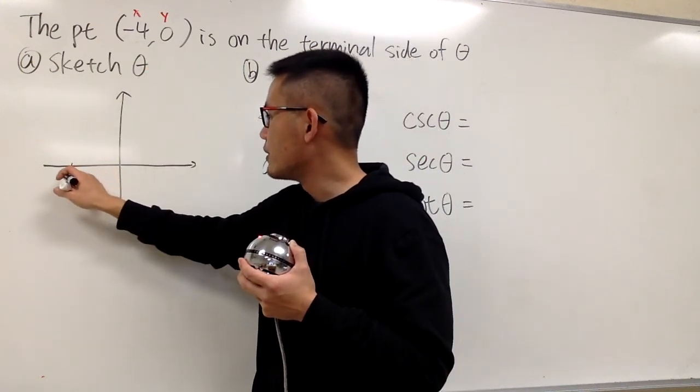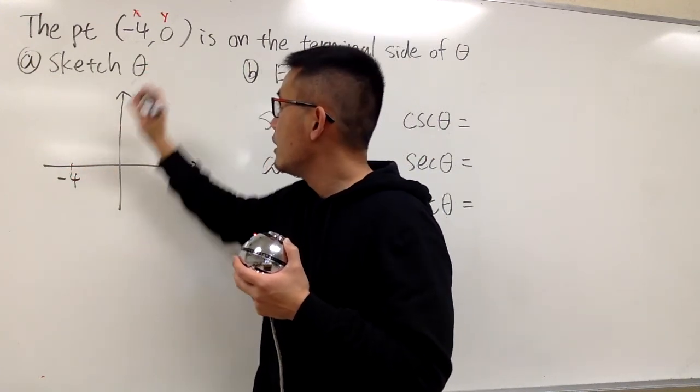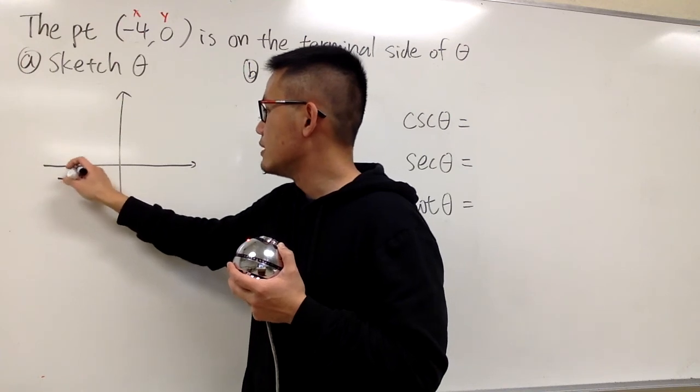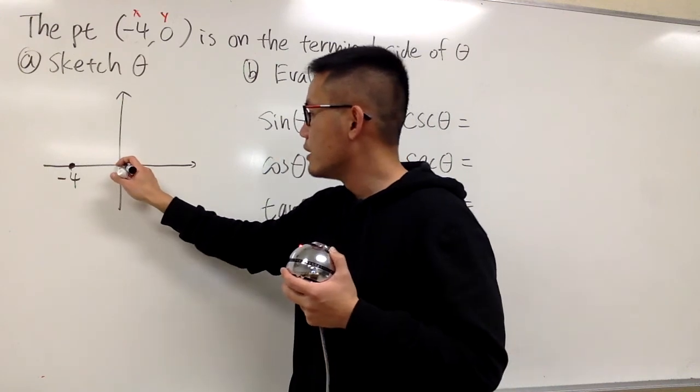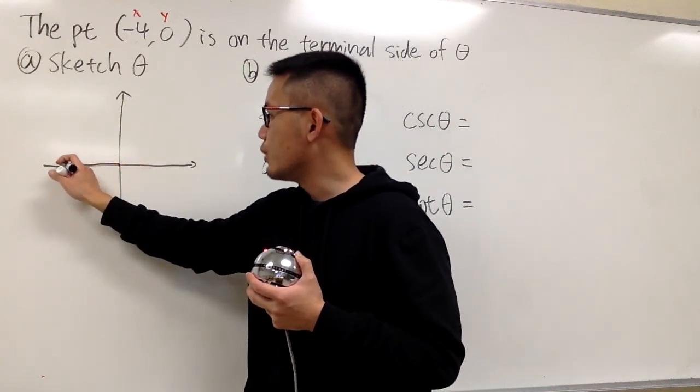The point is -4 for the x, and the y is 0, so this is the point that we have. And for the terminal side, we go from the origin and we pass through this point with a ray like this.